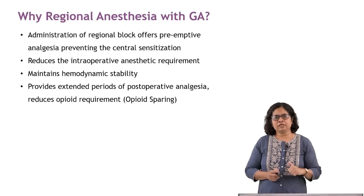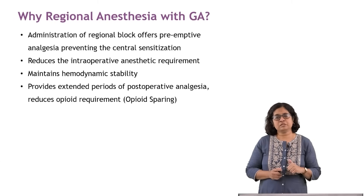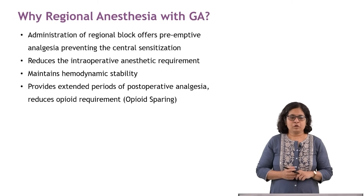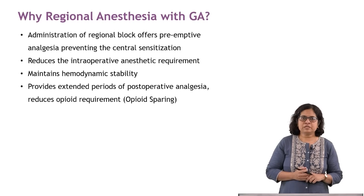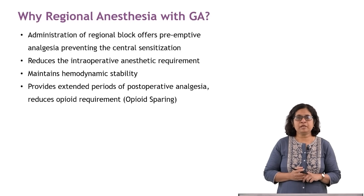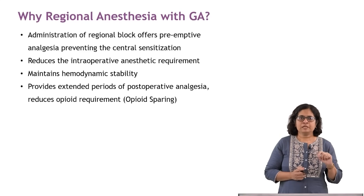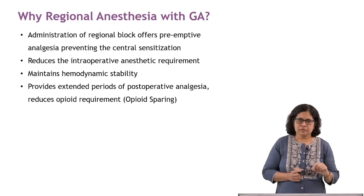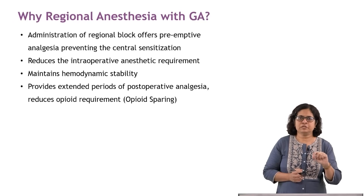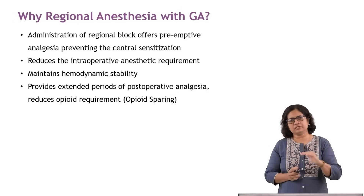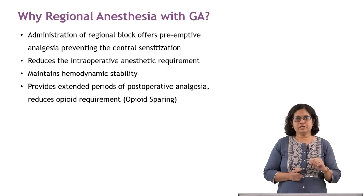Now that we have given general anesthesia, why is there a need for giving regional anesthesia? The administration of a regional block offers preemptive analgesia, preventing central sensitization. Preemptive analgesia is analgesia provided before the surgical incision occurs — you give analgesia first and then the surgeon operates.